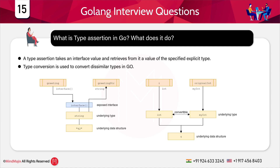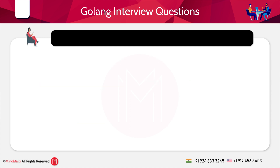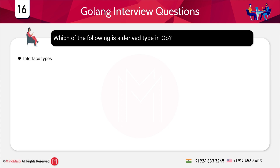Multiple choice question: which of the following is a derived type in Go? Options are: a) interface types, b) map types, c) channel types, or d) all of the above. The answer is d) all of the above — we have interface types, map types, and channel types all in Golang.